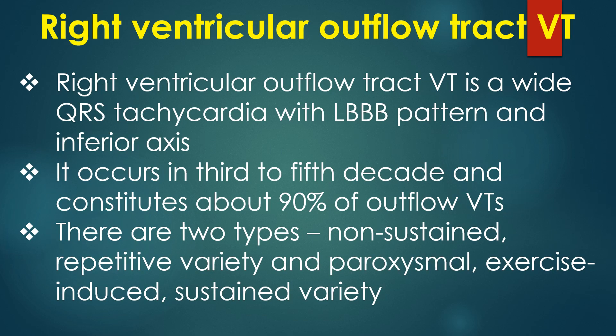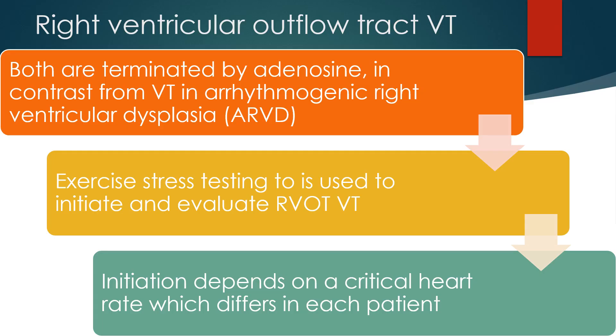Right ventricular outflow tract VT is a wide QRS tachycardia with left bundle branch block pattern and inferior axis. It occurs in the 3rd to 5th decade and constitutes about 90% of outflow VTs. There are two types: a non-sustained repetitive variety and a paroxysmal exercise-induced sustained variety. Both are terminated by adenosine, in contrast to VT in arrhythmogenic right ventricular dysplasia.